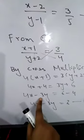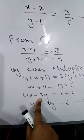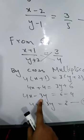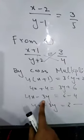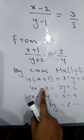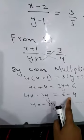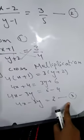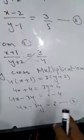That 3y would be shifted to this side of the equation. Sign would change from plus 3y to minus 3y. And this 4 will shift to this side of the equation, minus 4. 4x minus 3y is equal to 2. This is our equation 3.